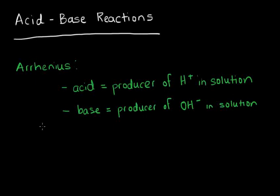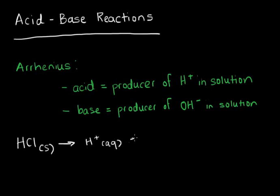We can look at two simple strong acids and bases to illustrate these points. If we take solid hydrochloric acid, we see that it dissociates in water to produce hydrogen ions and chloride ions. So when it dissociates, hydrochloric acid — an Arrhenius acid — produces these hydrogen ions.